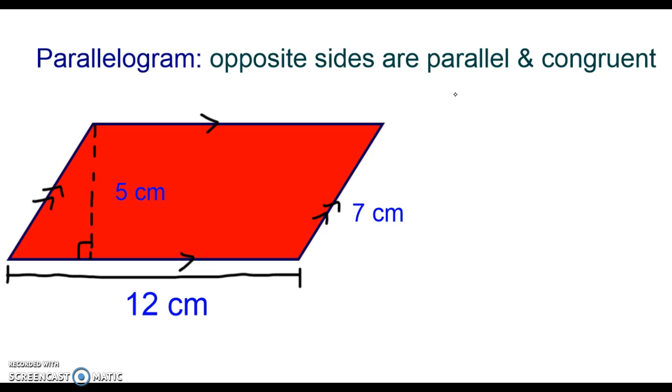And then since the opposite sides are congruent, we know that if the bottom here is 12 centimeters, that the top side must be 12 centimeters as well. And if this right side is 7 centimeters, well then the left side must be 7 centimeters as well.